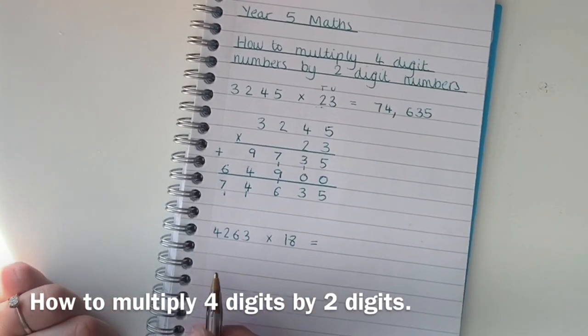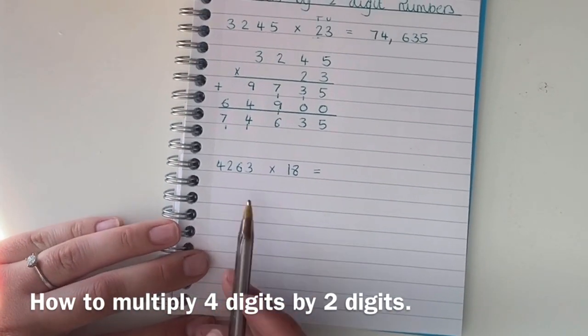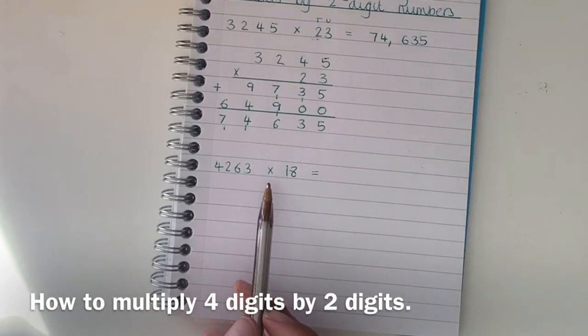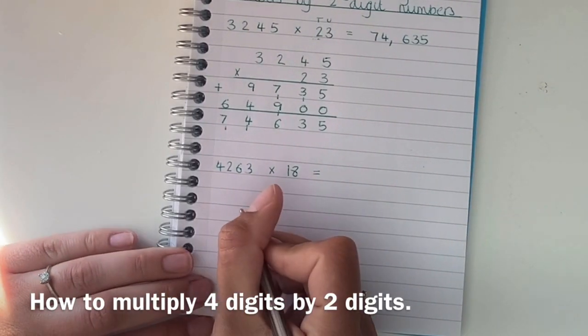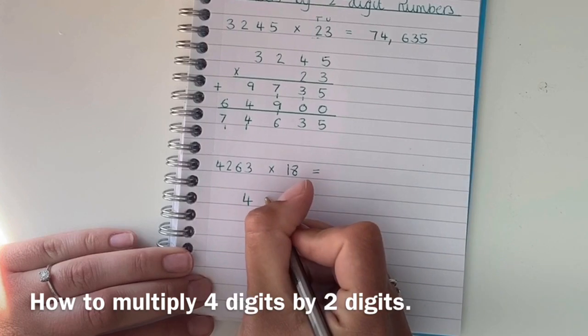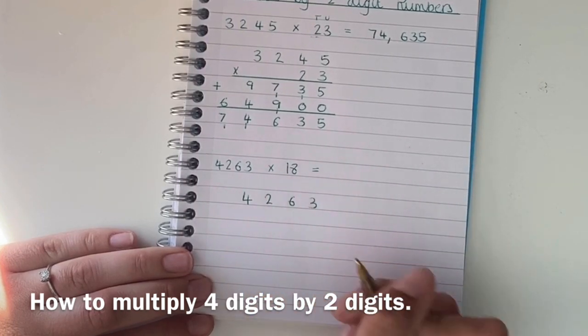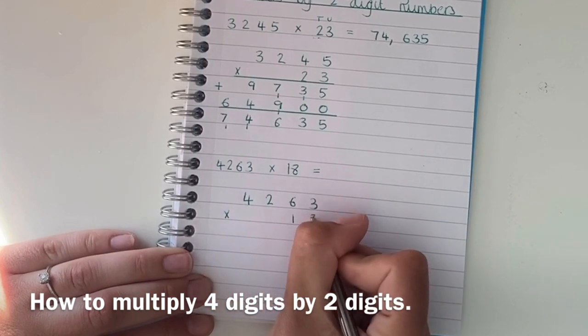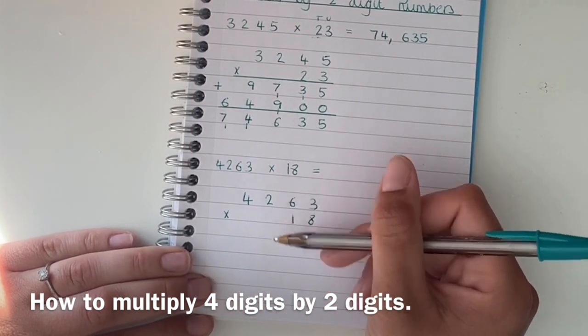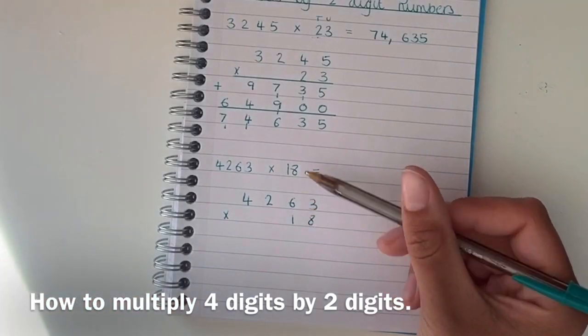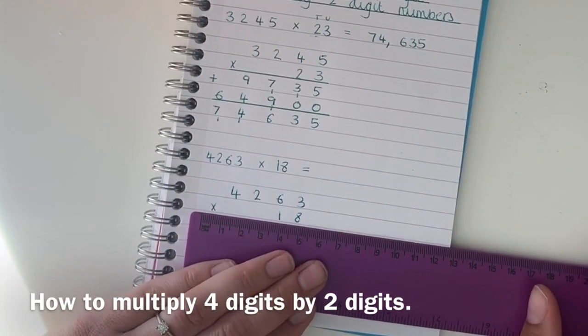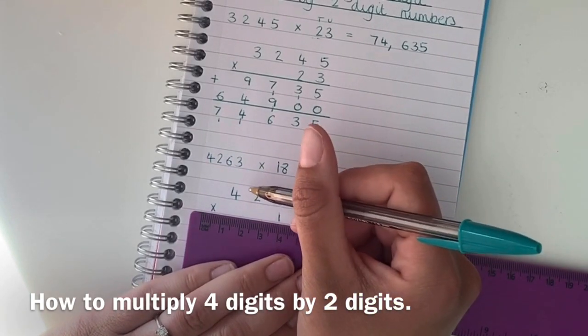Okay, I'm going to show you one more here. So we've got 4,263 multiplied by 18 this time. So again you need to set it out like a column but remember to be extra careful that they are all in the correct columns. I've got my units, my tens, my hundreds and my thousands because if you mix them up that's when you're going to get an incorrect answer.